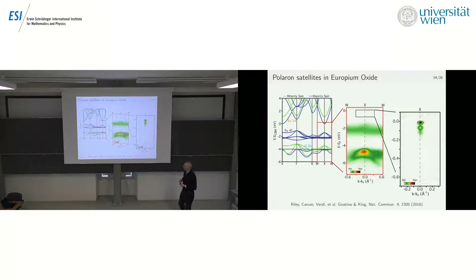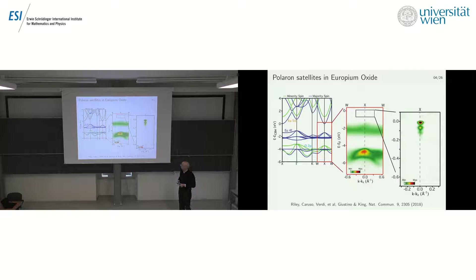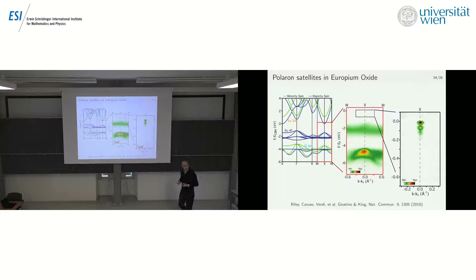A more recent experiment, which we've been involved in, was performed by the group of Professor Filking in Stanford. The idea was to dope europium oxide to obtain electrons in the conduction band by introducing gadolinium. Zooming into the ARPES spectrum, you find a similar feature: the conduction band tip, one satellite, and another satellite.